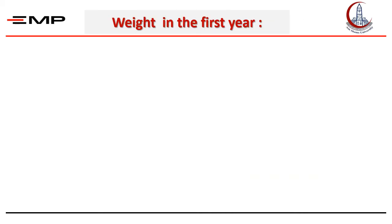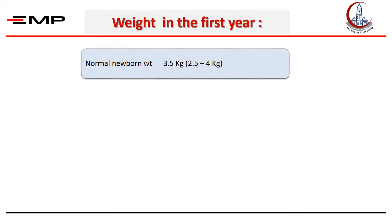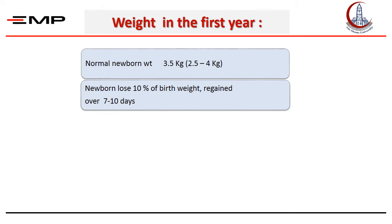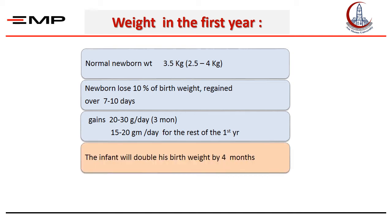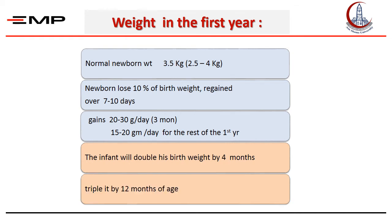Here are some facts about weight in the first year of life. The mean weight of a normal newborn is 3.5 kilograms. There is a loss of about 5 to 10 percent of this weight due to loss of extracellular fluid after birth, and then the weight is regained over 7 to 10 days. The infant gains 20 to 30 grams per day in the first 3 months of life, then 15 to 20 grams per day for the rest of the first year. So by the age of 4 months, the infant will double his birth weight, and by the age of 1 year, the infant will triple his birth weight.